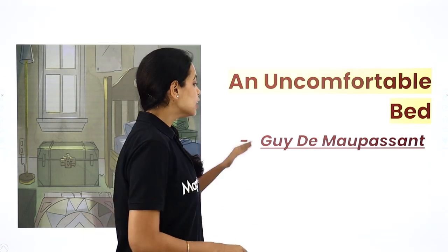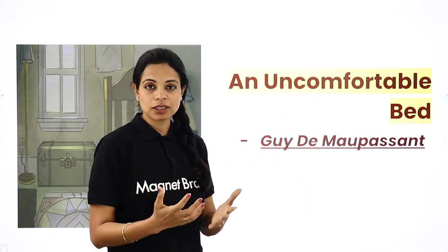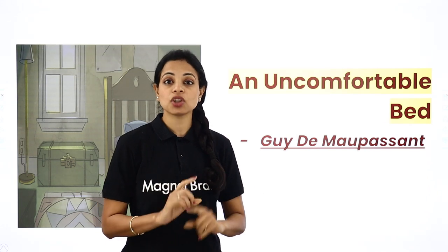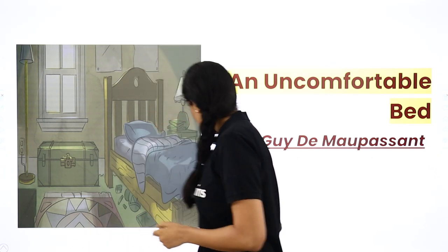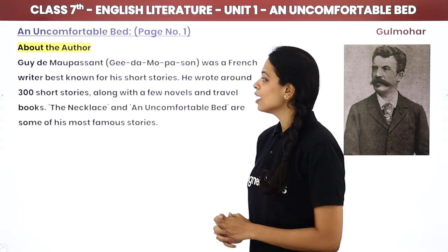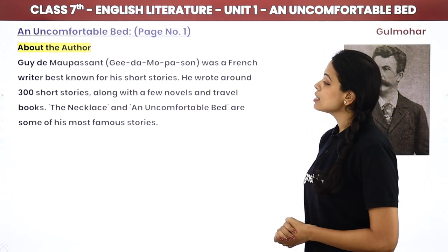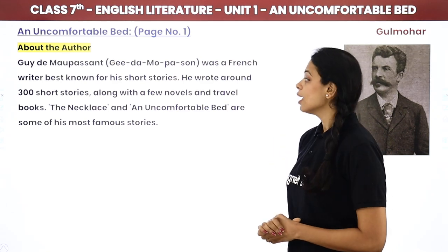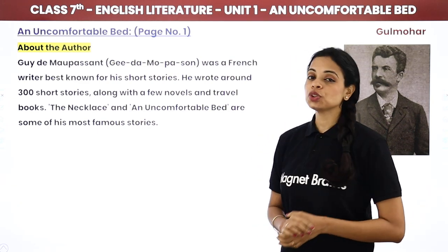The name of the chapter is 'An Uncomfortable Bed.' This has been written by Guy de Maupassant. Now this is a French name — do not call it 'G' or 'Guy' like in English. The correct pronunciation is Guy de Maupassant. Guy de Maupassant. He was a French writer best known for his short stories. He wrote around 300 short stories along with a few novels and travel books.